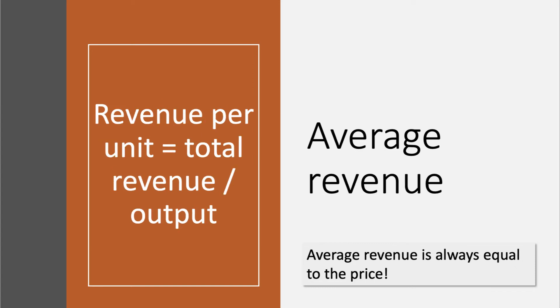Average Revenue is also known as the Demand Curve or the Price. Average Revenue, or Revenue per Unit, is simply Total Revenue divided by Output.